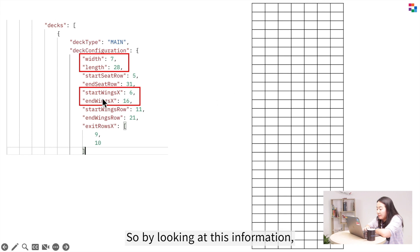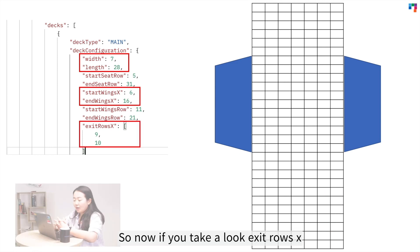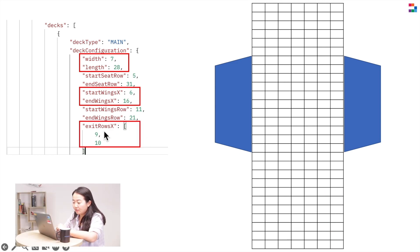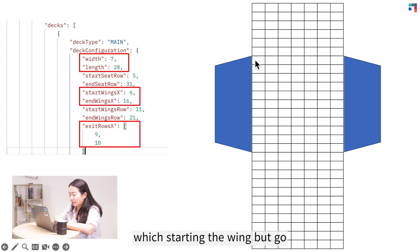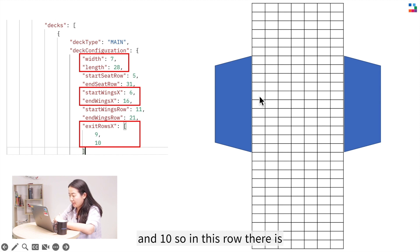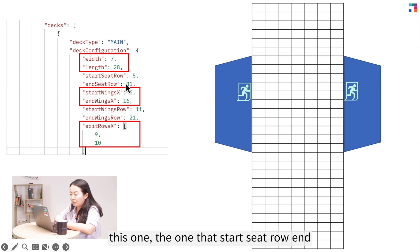By looking at this information, we can see the wing runs from coordinate 6 to 16. Now looking at exit row X — there is an exit at row coordinates 9 and 10. Counting 0, 1, 2, 3, 4, 5, 6 where the wing starts, then 7, 8, 9, and 10 — so in those rows there is an exit.